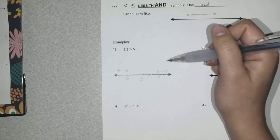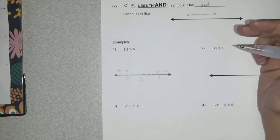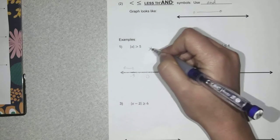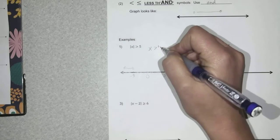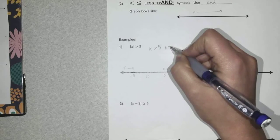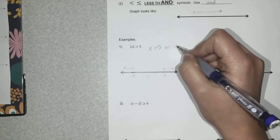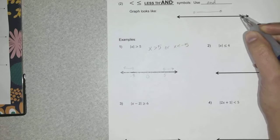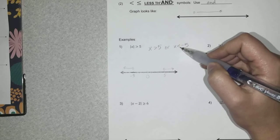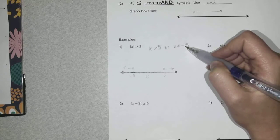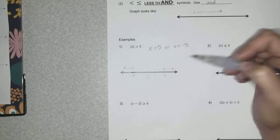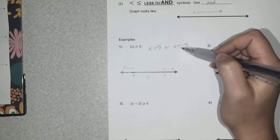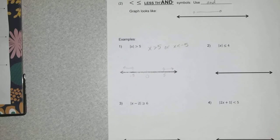Algebraically, we make two inequalities: x is greater than 5, or x is less than negative 5. The two changes we make are: flip the sign and add the negative. On the graph, we use open circles because there's no line underneath the inequality symbol.